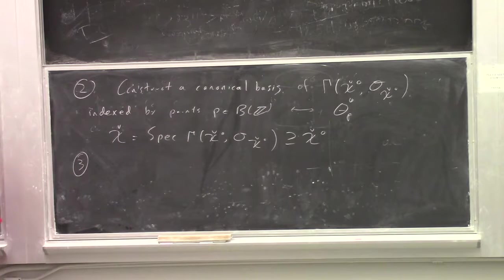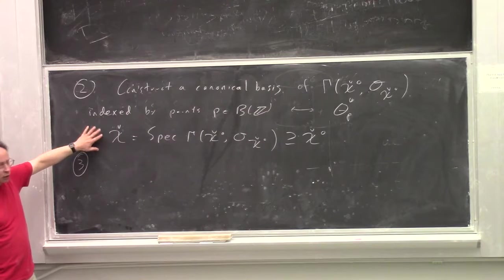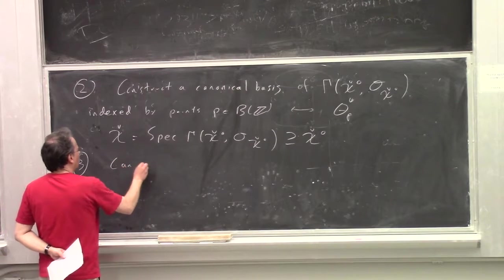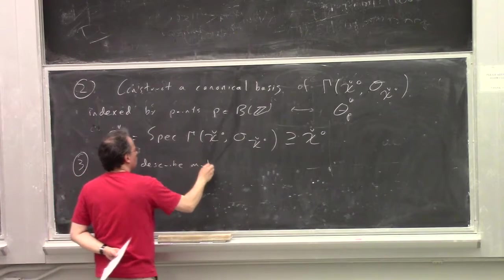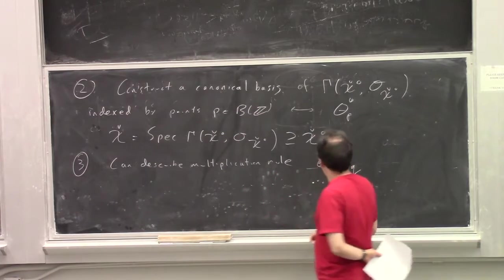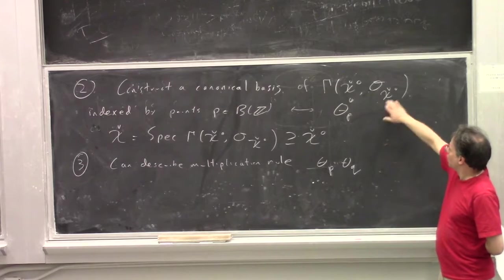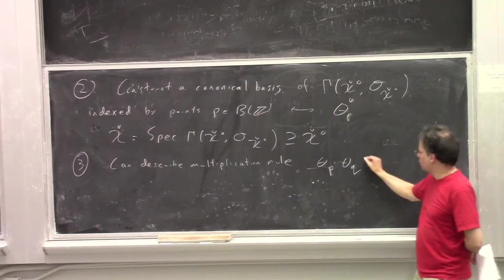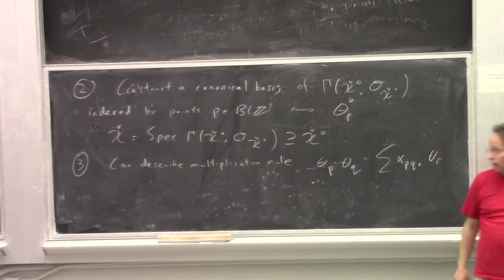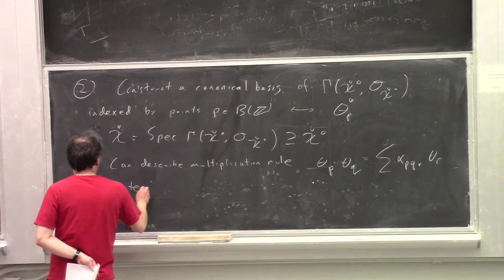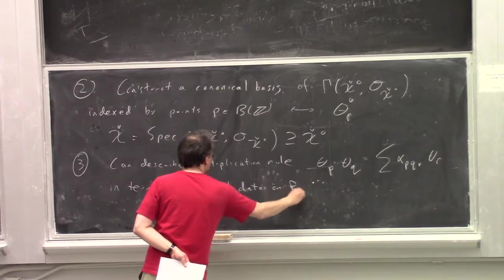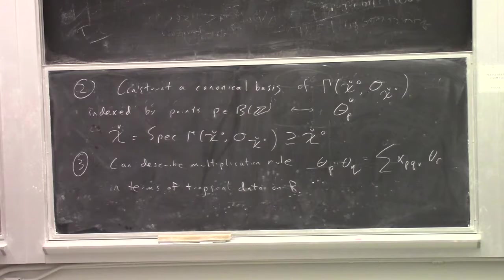The third step, which is not strictly necessary at this point because you've actually now constructed the mirror, the third step is that you actually can now write down a multiplication rule. So if you want to know what this gadget is as a ring, you do know what the product of two of these theta functions are.